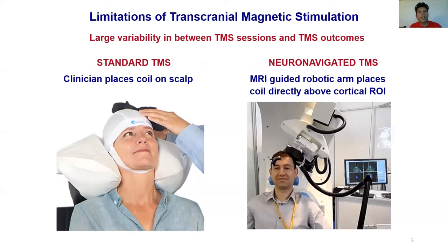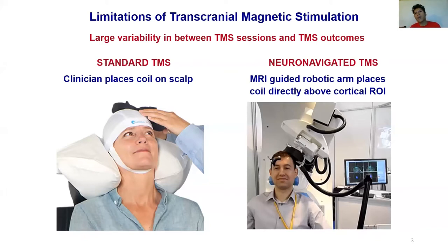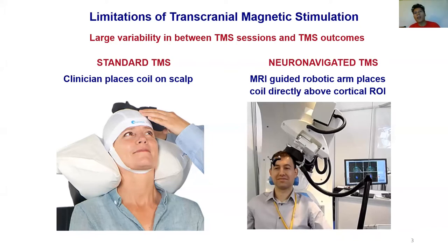Currently in a clinical setting, a commonly adopted placement approach is to use the five centimeter rule, which others have discussed, or to use an EEG coordinate system. These approaches often result in the coil not being placed directly under the targeted cortical sites, and operator error causes variation in the TMS-induced electric fields.